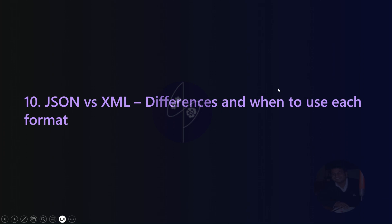Welcome back. In this session, we will discuss the differences between JSON and XML. JSON and XML serve as two prominent formats for storing and transporting data across various applications, including web services, APIs, and configuration files. Let's outline the distinctions between these formats and provide guidance on when to choose each one.